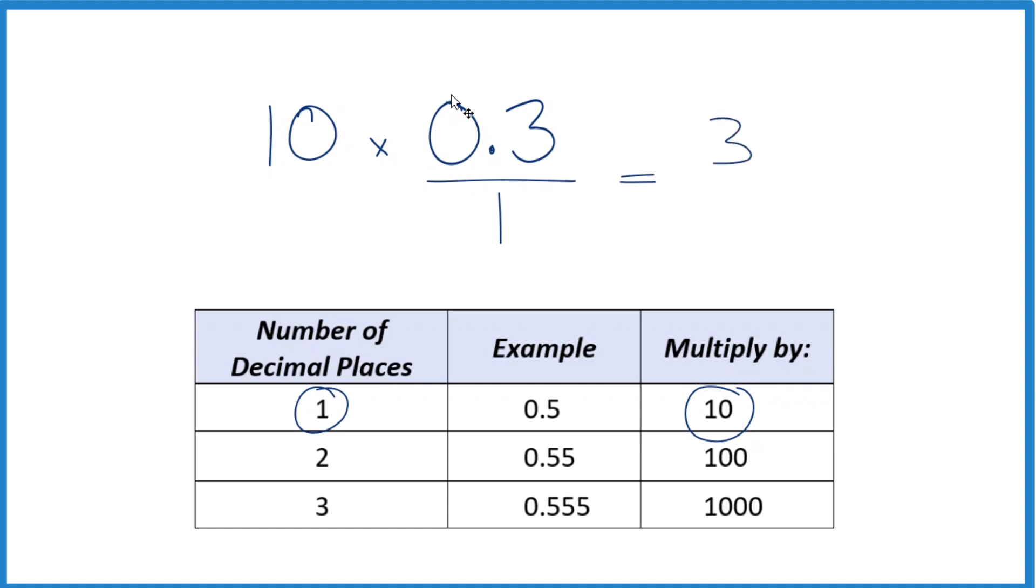And then we can't just multiply the numerator by 10. We have to multiply the denominator as well. So when we multiply the denominator by 10, we get 3 over 10.